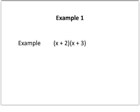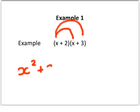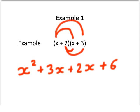Our example is (x + 2)(x + 3), and we just do a number of easy steps. We start off by doing x times x, which is x squared. We then do x times 3, which is 3x. We then do 2 times x, which is 2x. And then finally we do 2 times 3, which is 6. So at this stage we've got x squared plus 3x plus 2x plus 6.